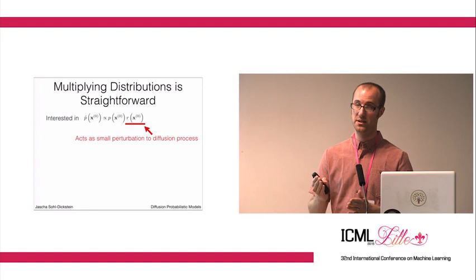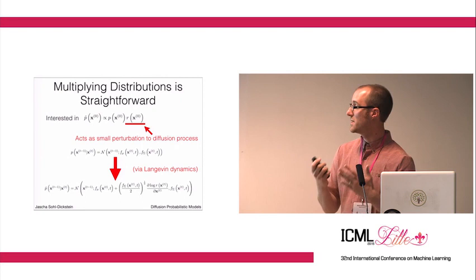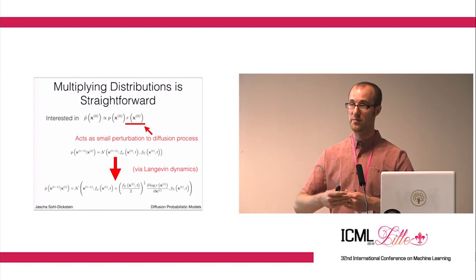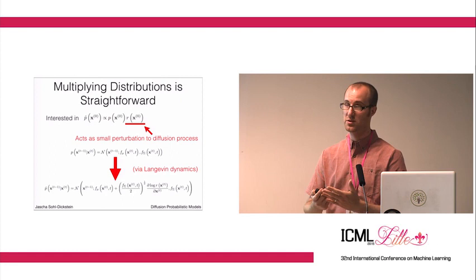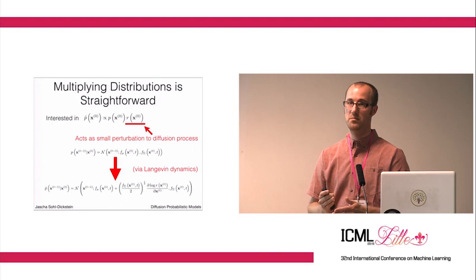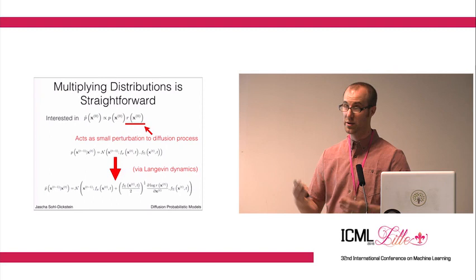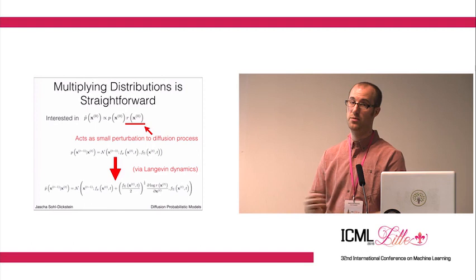I'm not going to go into the derivation right now except to say that because your generative model consists of many very small steps, each of which is a very sharply peaked Gaussian, the second distribution you want to multiply your distribution by is very smooth compared to each of those steps. So you're able to analytically multiply by an arbitrary function by multiplying it into each of your Gaussian diffusion steps.